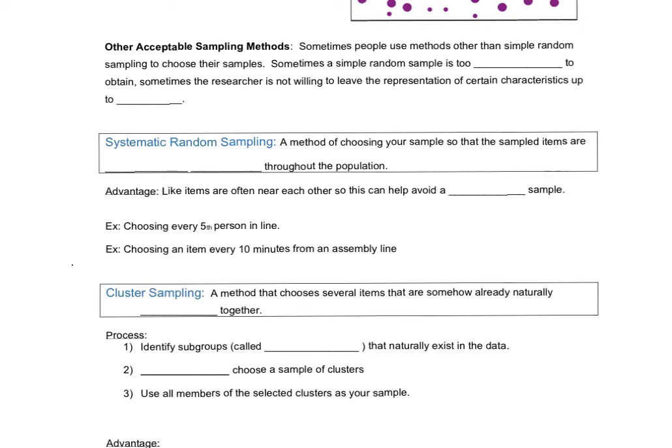Welcome back! We're continuing section 1-3. We've already talked about simple random sampling in the previous video and now we're going to look at other acceptable sampling methods. Sometimes we just can't use simple random sampling. Sometimes people use methods other than simple random sampling to choose their samples. Sometimes simple random sampling is too challenging to obtain, or sometimes the researcher isn't willing to leave certain representations up to chance.